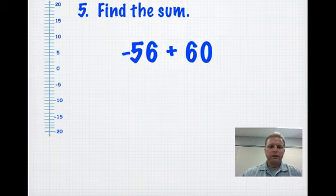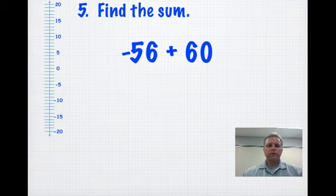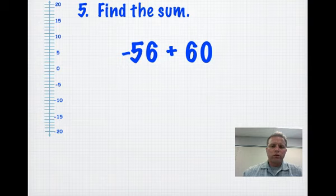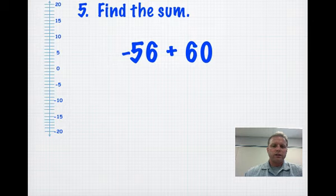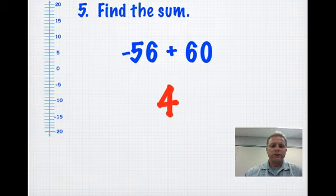Negative 56 plus 60. Would you try this problem? Go ahead and pause the video. One thing that it helps to do is ask, do you have more positives or more negatives? Since you have 60 positives, 56 negatives, your answer should end up positive. So we'll start out at negative 56. Go up 60. That puts you at a positive 4.